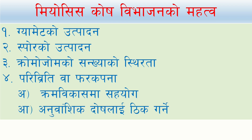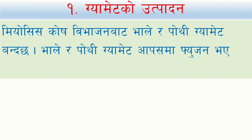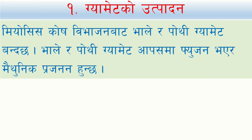This is the meiosis cross-division. The gamete is used in meiosis cross-division. The gamete is used in fusion. The fusion produces a zygote. This is a single cell. The gamete leads to zygote formation.